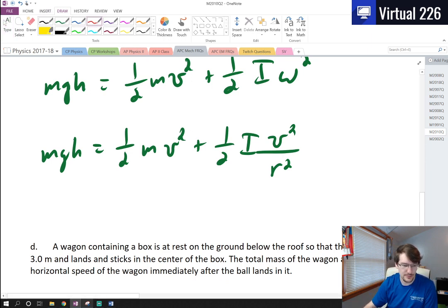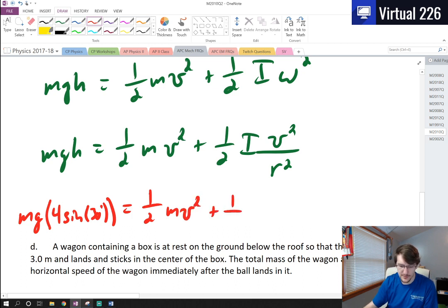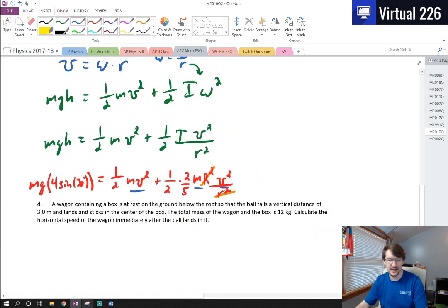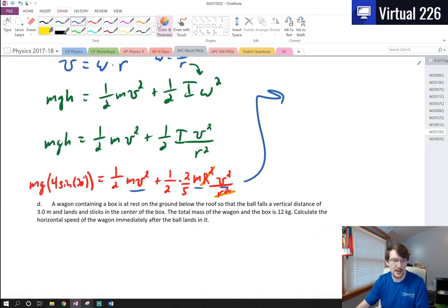So we say that MGH, and since we know the angle of the roof, this H here is going to be the hypotenuse of 4 times the sine of 30, that's just a little bit of trig. We can say that MGH equals 1 half MV squared plus 1 half I omega squared. If we want to look for a linear speed, let's get rid of this omega. We can say that omega equals V over R. So this equation is going to be MGH equals 1 half MV squared plus 1 half I times V squared over R squared.